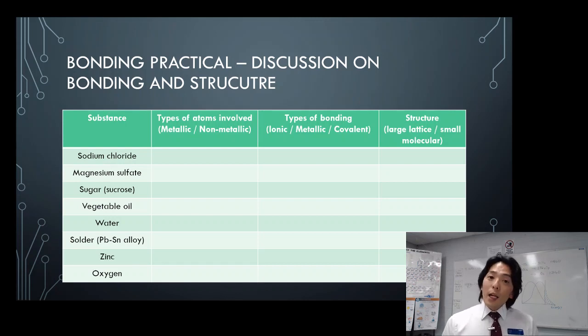By looking at that types of bonding, you have to be able to work it out, either ionic, metallic, or covalent. And that should tell you what sort of structure they'll have. Would they be large lattice or small molecular, which you can do by using your brain?